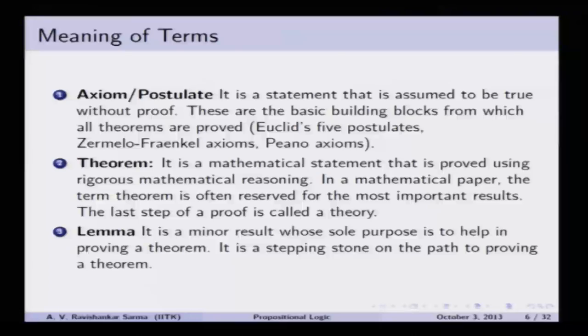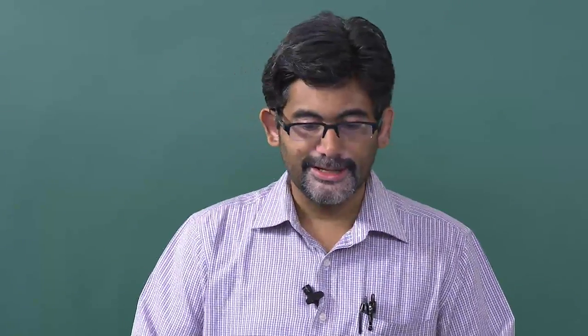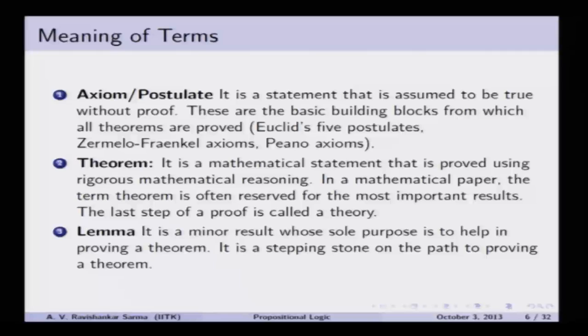It so happened that Paul Bernays, a logician contemporary to Bertrand Russell and Whitehead, came up with a proof that the 5th axiom of the Russell-Whitehead axiomatic system can be derived from the other axioms. In that sense, it loses its status as an axiom and becomes a theorem. When Russell and Whitehead formulated their axiomatic system it had 5 axioms. If any axiom is proved from any other thing, it is considered a theorem and loses its axiomatic status. Coming up with these axioms is the most difficult thing.